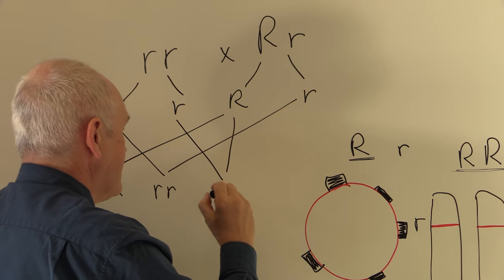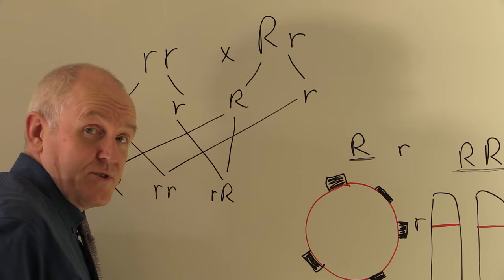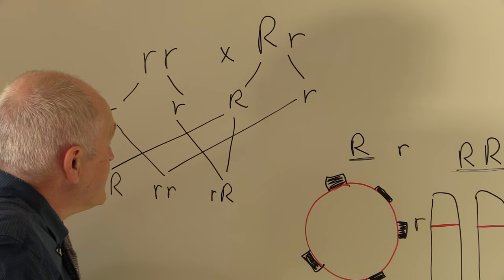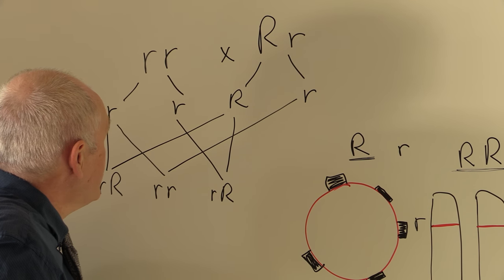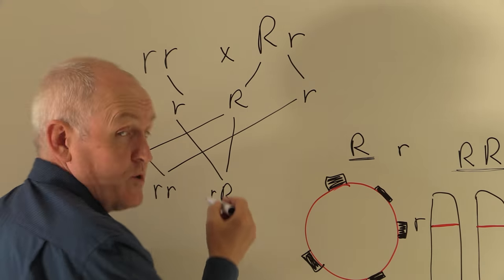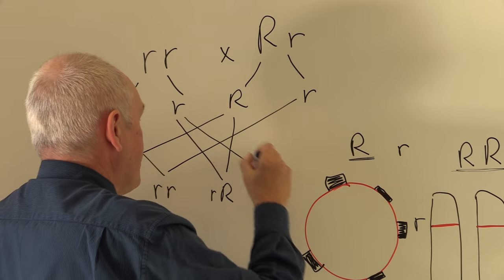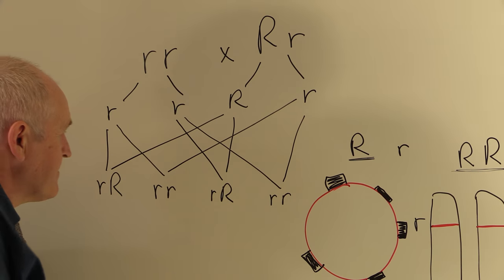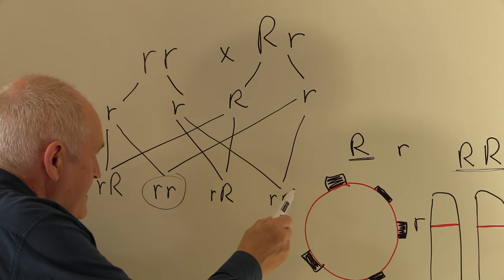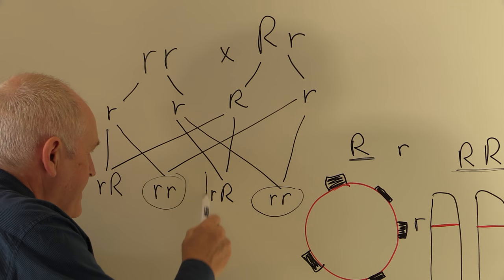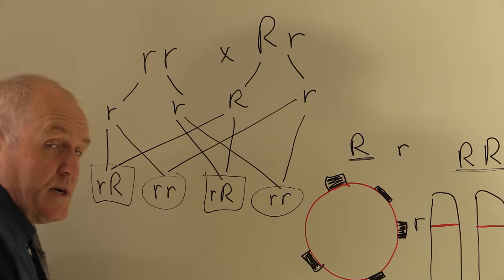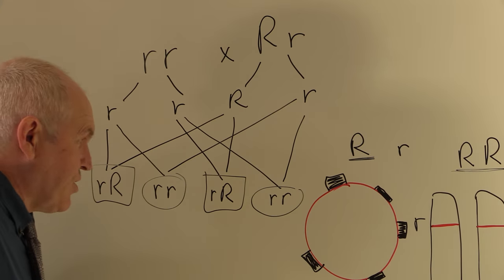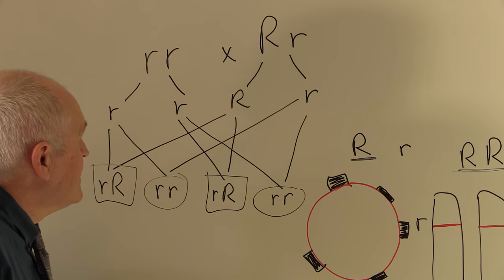Alternatively, it could be that one with that one, resulting in a Rhesus positive fetus, because there is one copy of the Rhesus gene present, which of course is dominant. Or it could be that one combining with that one, which will give us two small r's. So here we see the probability is 50-50 that any particular fetus will be Rhesus positive. The presence or absence of the Rhesus factor is entirely genetic.